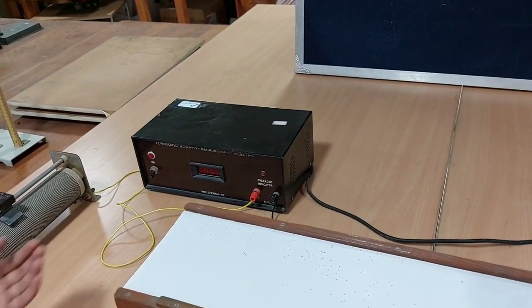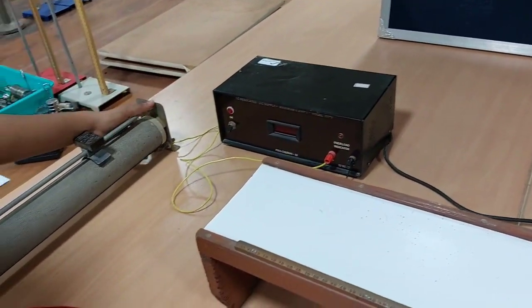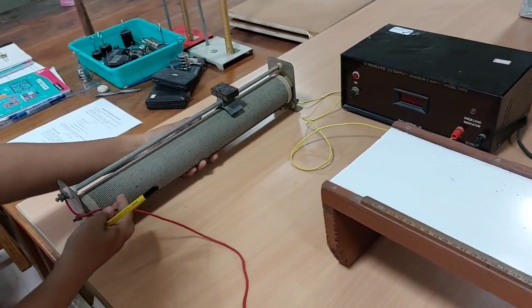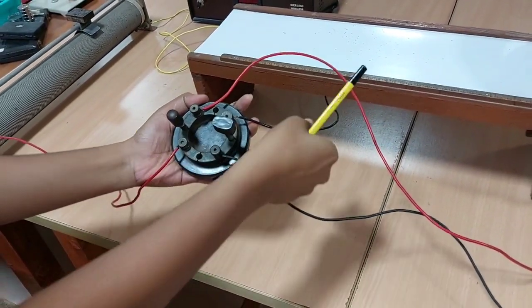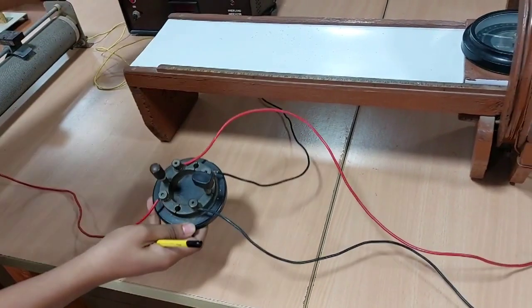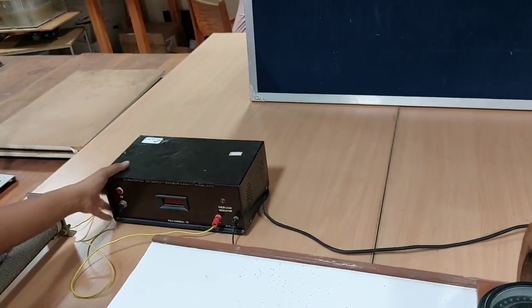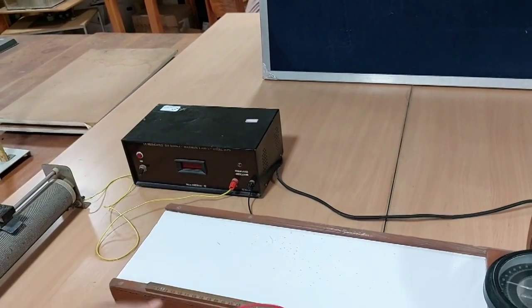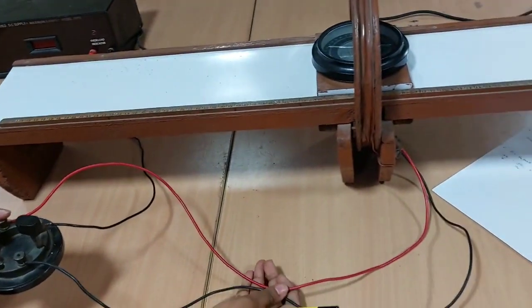You can see the connections here. So the battery, the DC power supply, is connected to the rheostat and the other end of the rheostat is connected to the commutator. So the opposite end is again going back to your DC power supply. The other two sides of your commutator go to the other ends of your coil.